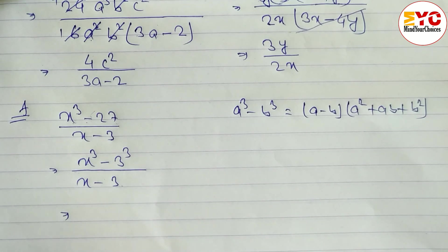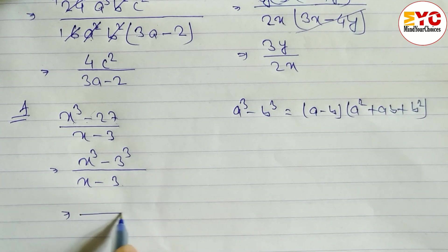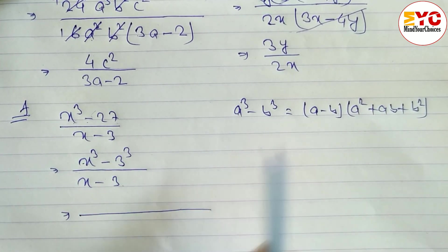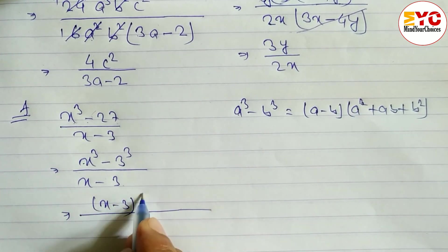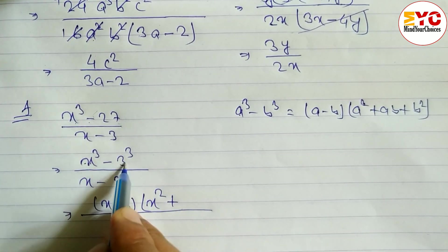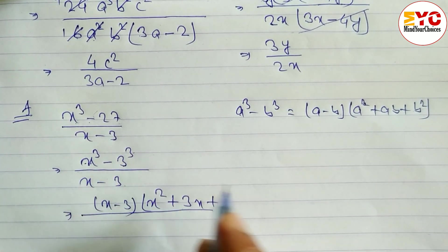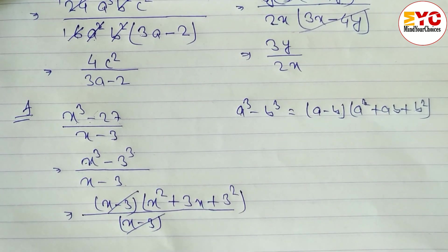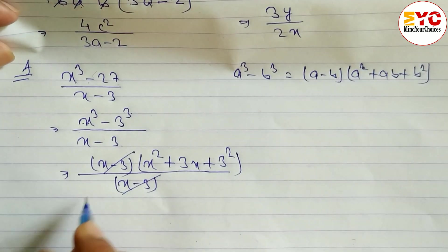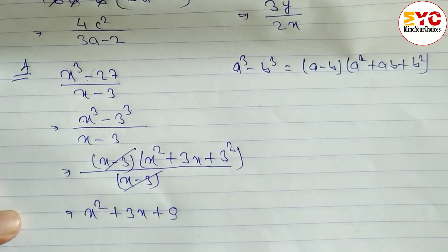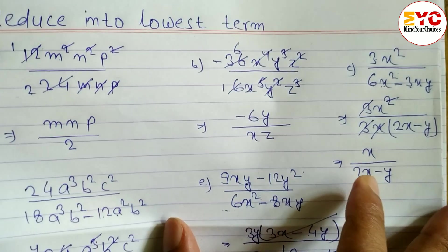Applying the formula with a = x and b = 3: the numerator becomes (x - 3)(x² + 3x + 3²). The factor (x - 3) in the numerator cancels with (x - 3) in the denominator, leaving the final answer x² + 3x + 9.